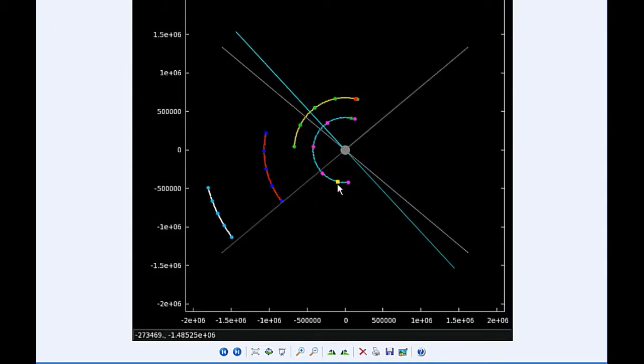At 21:59 UTC, Io goes through an apijove, that's the furthest it's going to be in this orbit, and that's 423,551.6 kilometers.